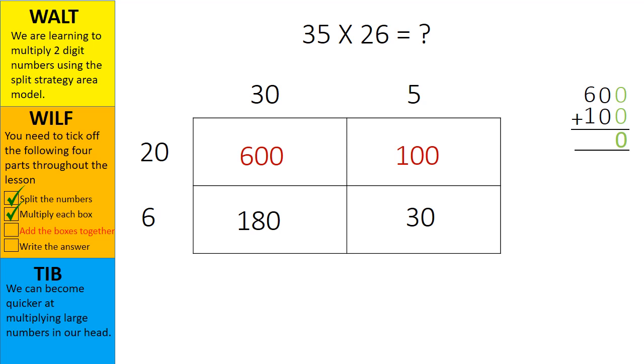I will move into the tens placeholder, another 0 and 0. This also equals 0. Now I'm into my hundreds placeholder, 600 plus 100. This equals 700. The answer to the top two boxes, 600 plus 100 is 700.